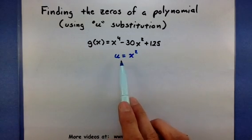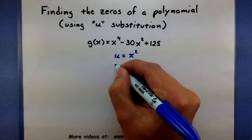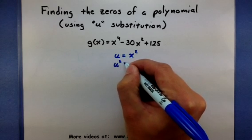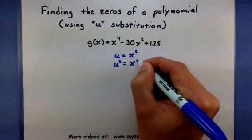Now, if I square the u and I square an x squared, this will also give me something to replace for x to the fourth.